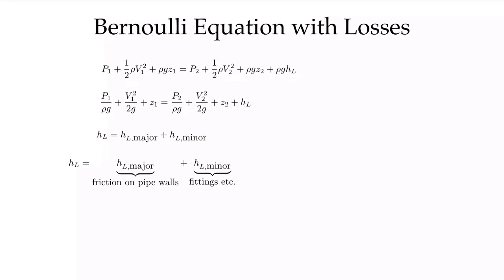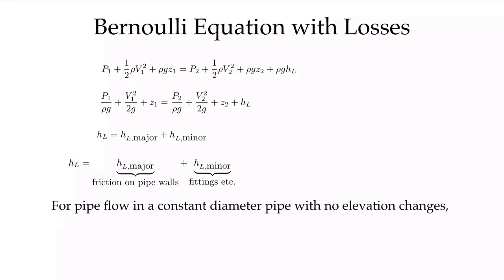The major loss is the pipe friction on the walls due to wall shear stress, which is balanced by the pressure drop in our fully developed flows. If we have flow in a constant pipe with no elevation changes, this simplifies greatly. We can see clearly that p1 minus p2 — p1 has to be higher than p2 to drive the flow — equals rho·g·h_L. Since pipe diameter is constant, v1 equals v2 and those terms cancel. With no elevation terms, we simply have p1 minus p2 over rho·g equal to h_L.